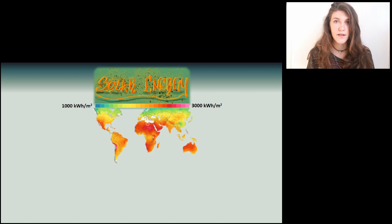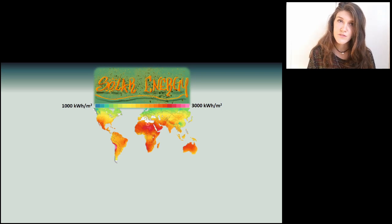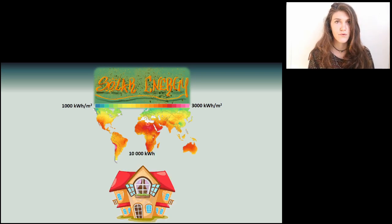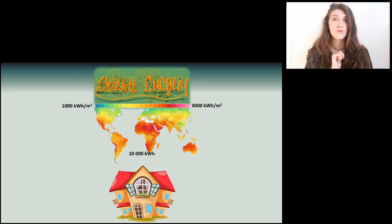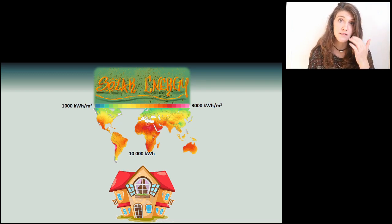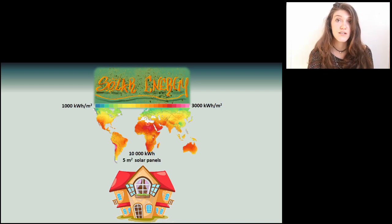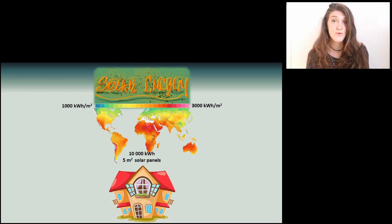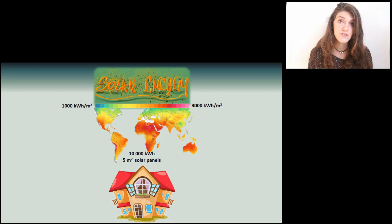Now, these numbers may be like random numbers for you. But if you take into consideration that an average house, for example, your own house, consume more or less 10,000 kilowatt hour per year in order to survive, then you would need only 5 meters squares of solar panel to produce the energy that you would need for life.